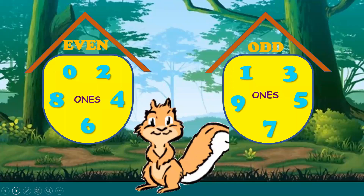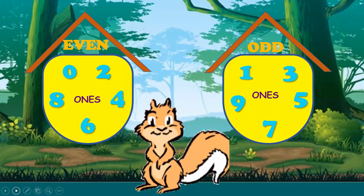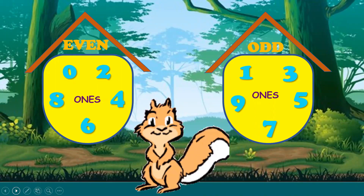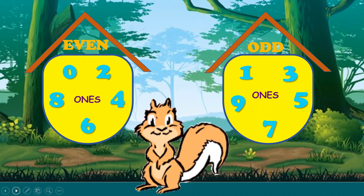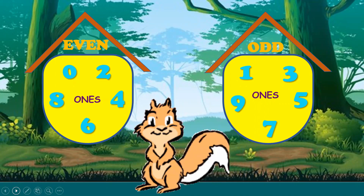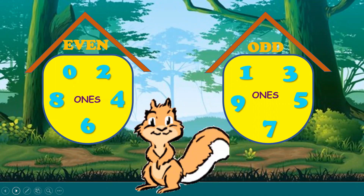So, even numbers end with 0, 2, 4, 6 or 8, and the odd numbers end with 1, 3, 5, 7 and 9.